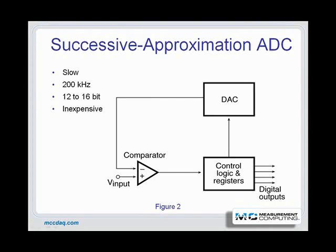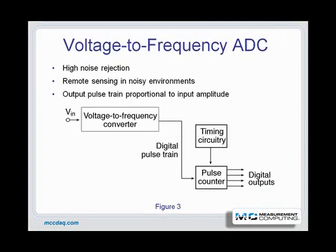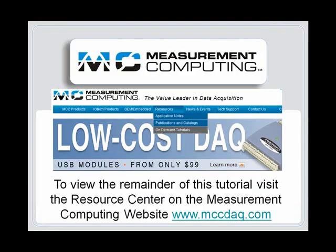Successive approximation ADCs are relatively slow because the comparisons run serially, and the ADC must pause at each step to set the DAC and wait for its output to settle. However, conversion rates can easily reach over 1 MHz. Also, 12 and 16-bit successive approximation ADCs are relatively inexpensive, which accounts for their wide use in many PC-based data acquisition systems. To view the remainder of this tutorial, please visit the on-demand tutorials in the resources section on Measurement Computing's website at www.mccdac.com.